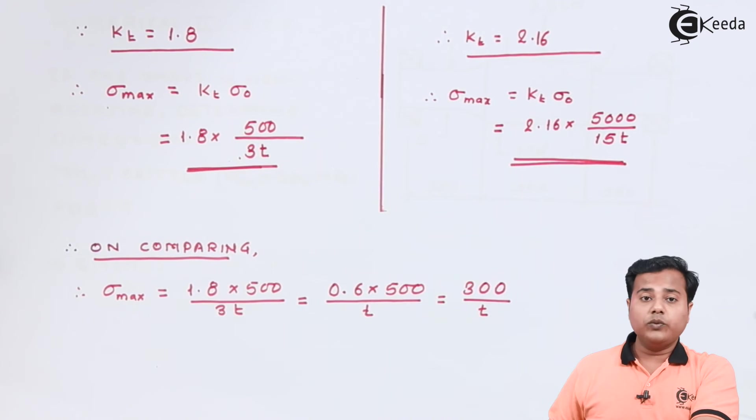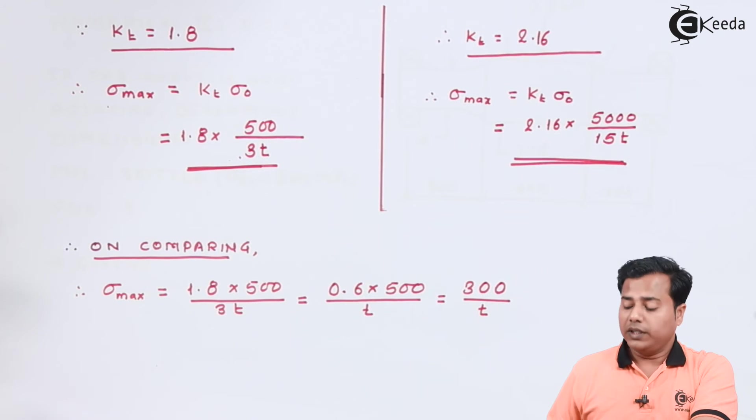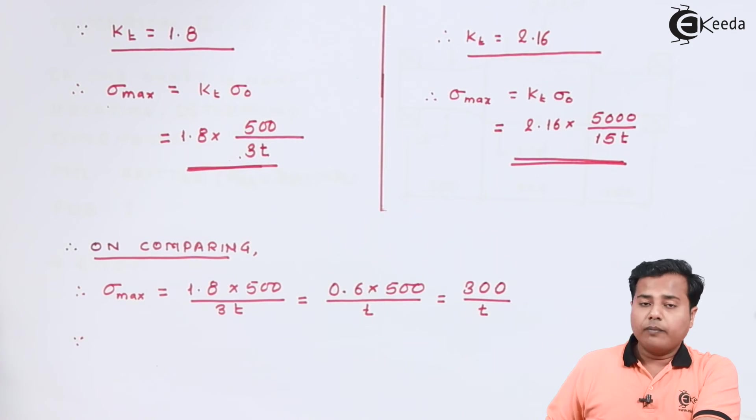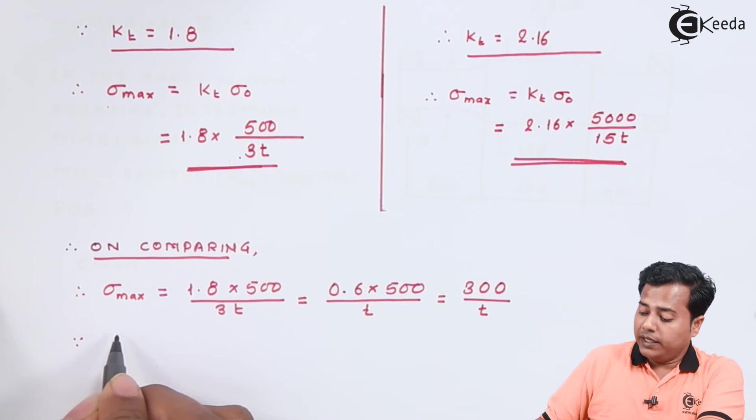Where t is the unknown which is the thickness that we need to find out. Now we also know that the maximum stress, maximum ultimate stress is given and factor of safety is also given so that sigma safe will be given by sigma ut divided by factor of safety.